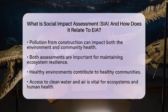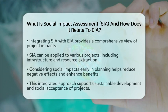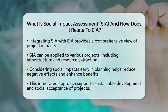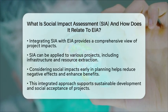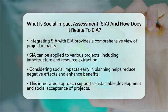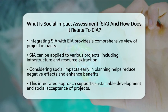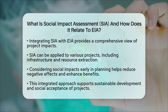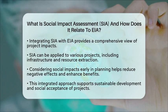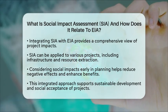By considering social impacts early in the planning stages, projects can be designed to reduce negative effects and enhance benefits for local communities. This approach supports sustainable development, ensuring that projects are both socially acceptable and environmentally friendly. In the context of ecosystem resilience, combining social impact assessment with environmental impact assessment helps ensure that development projects do not harm ecosystems or the people who rely on them.